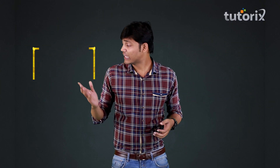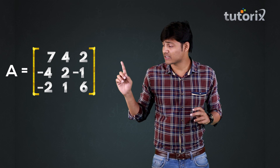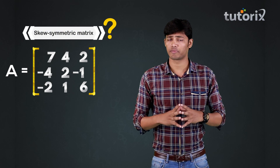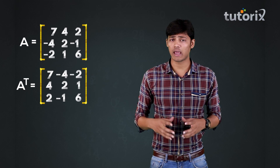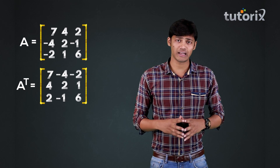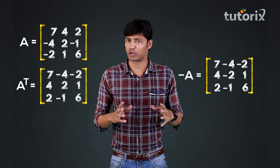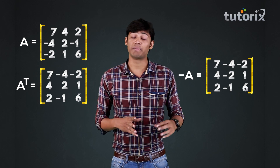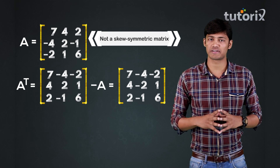Here we have matrix A. Let us see whether the matrix A is a skew-symmetric matrix or not. We will find the transpose of the matrix A, and we can clearly see that A transpose and minus A are not equal. So therefore we can conclude that the matrix A is not a skew-symmetric matrix.